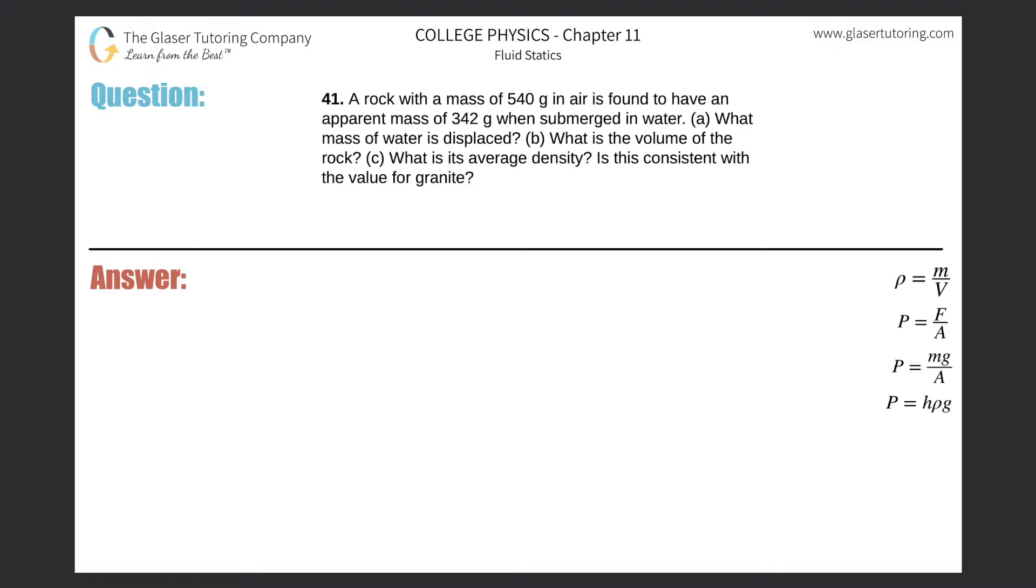Number 41: A rock with a mass of 540 grams in air is found to have an apparent mass of 342 grams when submerged in water. Letter a: What mass of water is displaced? All right, so first of all...